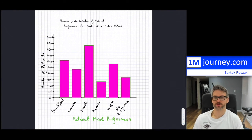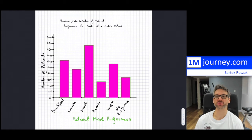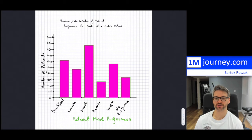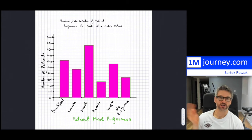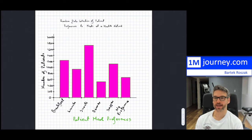That is your entire graph — nice and clean. That is an example of a bar graph presenting the data — in this case, meal preferences of patients, which is qualitative data.